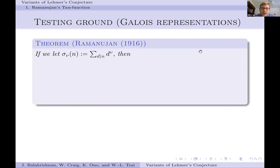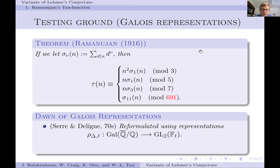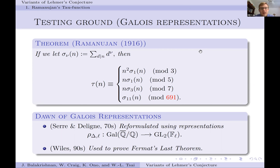Another important area arising in connection to the tau function is that of Galois representations. If we define sigma_nu(N) as the sum of the nu-th powers of divisors of N, then the tau function satisfies very pleasing congruence conditions mod 3, mod 5, and mod 691 relating to these divisor sums. This was extended by Serre and Deligne, who reformulated these in terms of representations of the absolute Galois group of Q. Wiles famously used Galois representations in his proof of Fermat's Last Theorem.